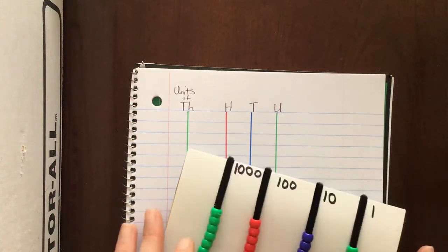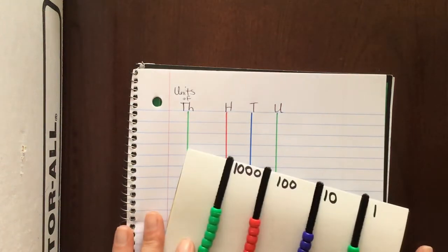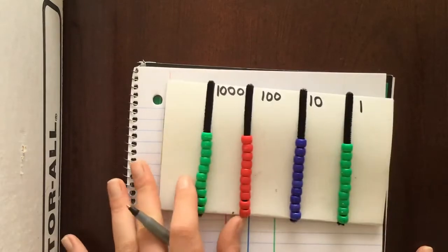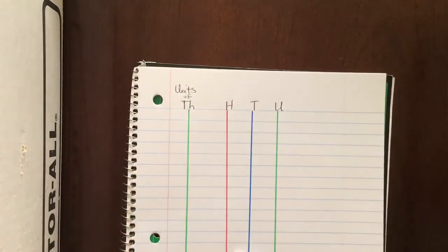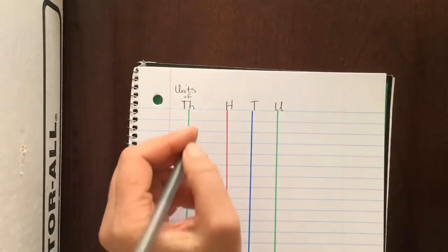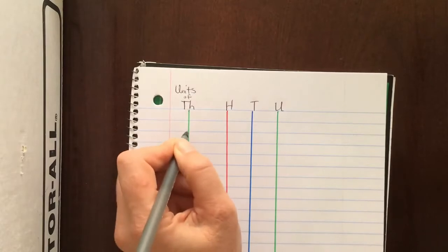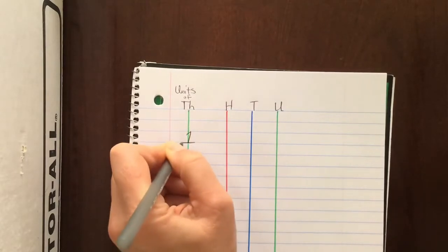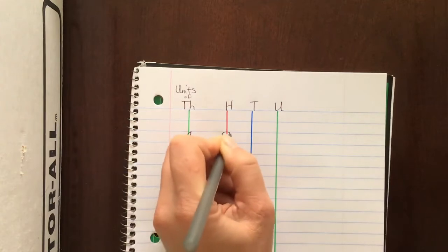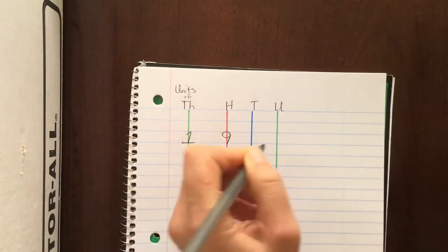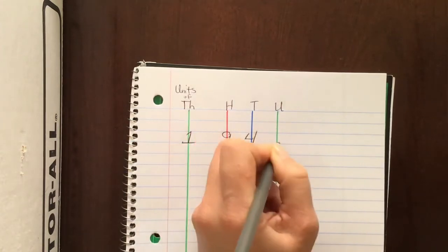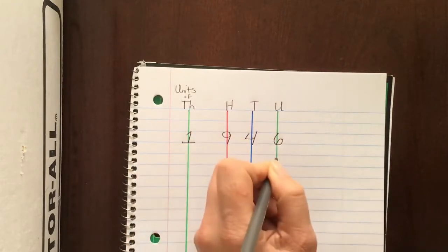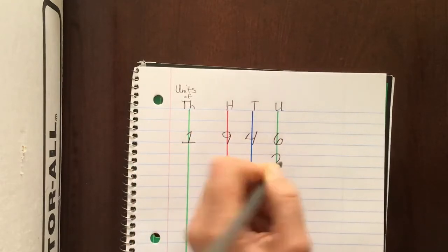We are going to do a multiplication problem with the small bead frame with exchanging. The problem is one thousand nine hundred forty-six times two.